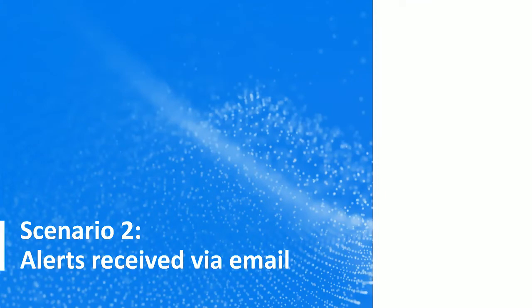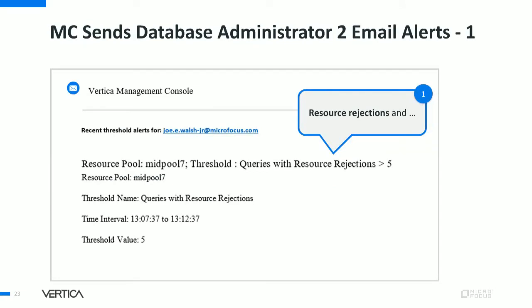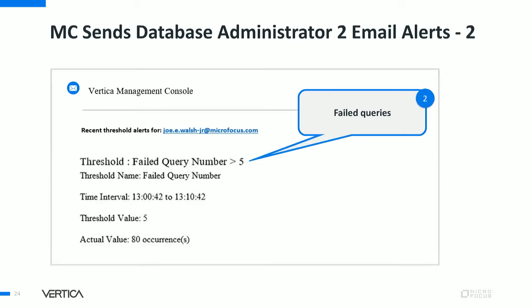Now let's go over another use case where DB admins received alert email messages from MC and want to understand and analyze the problem. To proactively react to problems, DB admins can create thresholds in MC and get alerted when conditions are reached. As a DB admin, I see email notifications from MC: one for query resource rejections greater than 5 for mid-pool 7, and another for failed queries greater than 5 — in this case showing 80 failed queries. Let's go into MC and investigate the problem.